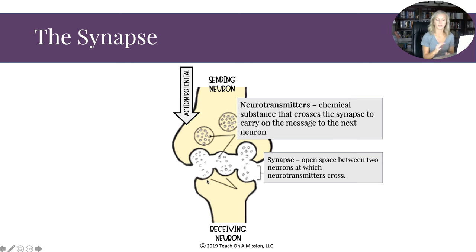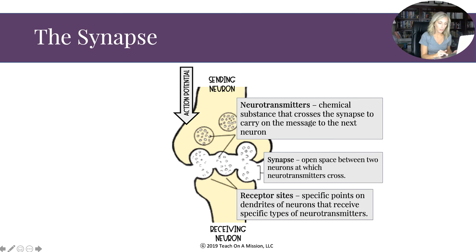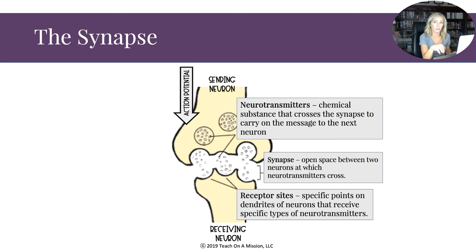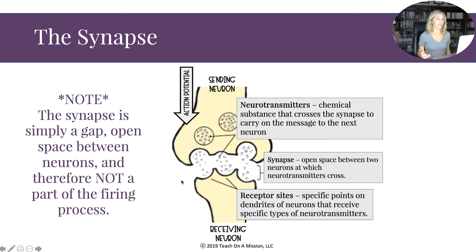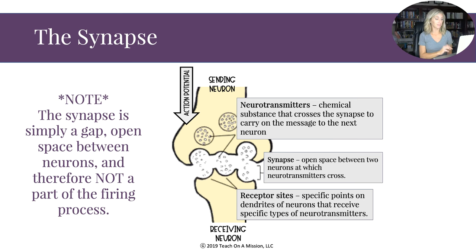The synapse is simply an open space — it's a name for nothing, just the gap between two neurons at which neurotransmitters cross. On the receiving neuron's dendrites are receptor sites: specific points that receive specific types of neurotransmitters. Each neurotransmitter has a specific receptor site. The synapse is just a gap, not a part of the neuron's firing process.